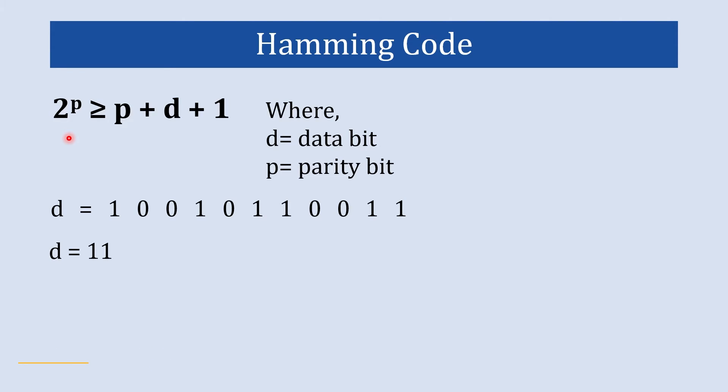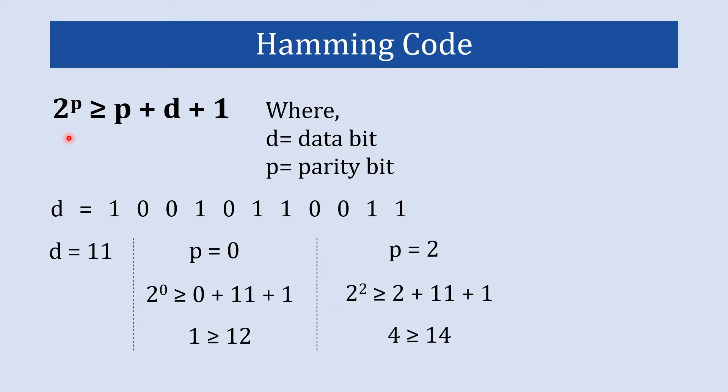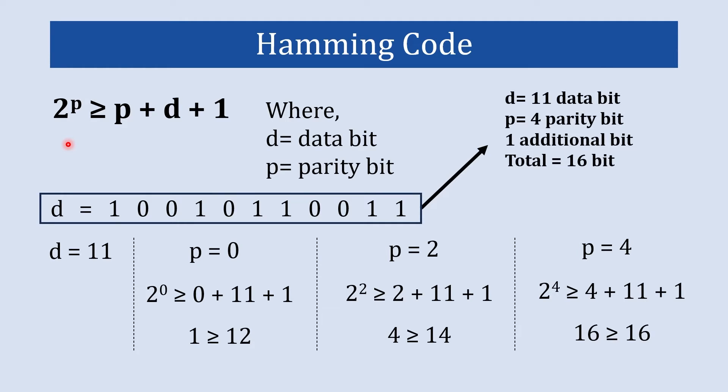We start by assuming p values one by one. If p equals 0, then 2^0 = 1 ≥ 0+11+1 = 12 — this does not satisfy the equation. If p equals 2, it still does not satisfy the equation. If p equals 4, then 2^4 = 16 ≥ 4+11+1 = 16 — this satisfies the equation. So to send 11 bits of data we need 4 parity bits, and together with the additional bit it becomes 16 bits total.